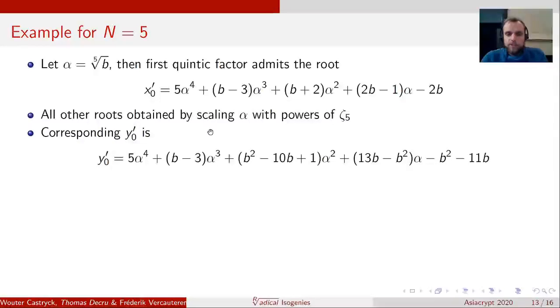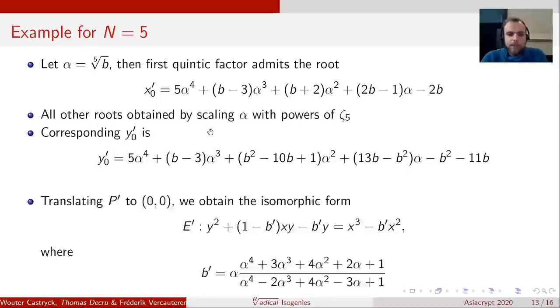So we're done, apart from some very minor step, in the sense that we found a P prime. However, if we translate this back to (0,0), we obtain an isomorphic form that is in Tate normal form again. Now it's just B' instead of B, and B' is a very simple rational expression in the fifth root of B, with coefficients no more than 4.